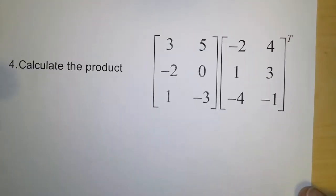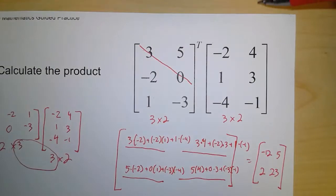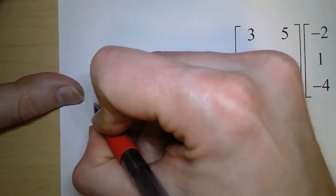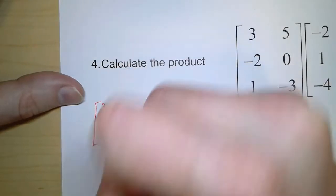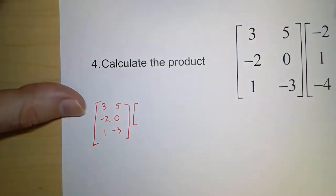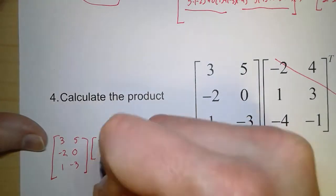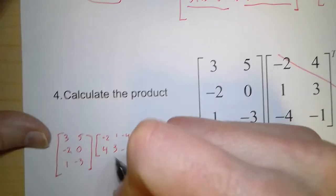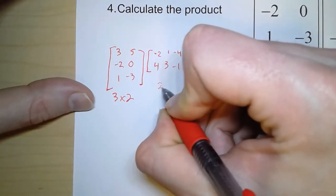Now for number 4, we're transposing the second matrix. The first one stays unchanged: 3, negative 2, 1, 5, 0, negative 3. The second one, we're going to transpose. So I draw my line. Negative 2 and 3 stay put. So we have 4 over there. 1 and negative 4, we have negative 1. So now what we have is a 3 by 2 and a 2 by 3.